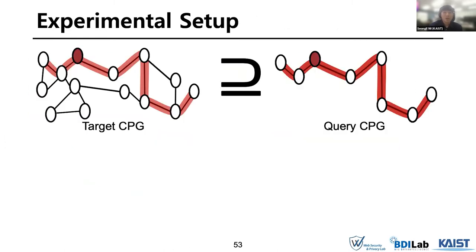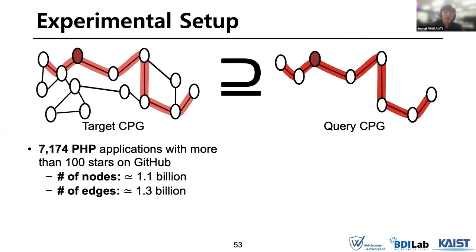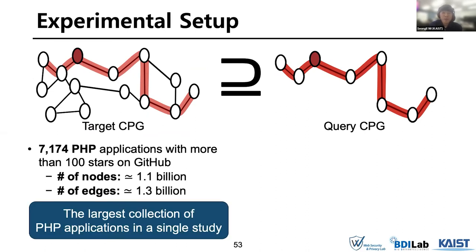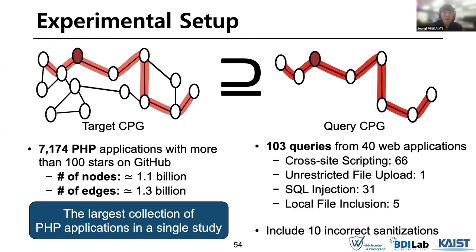Now I will show experimental evaluations on our system. To prepare a target CPG, we collected about 7,000 highly rated applications. The total number of nodes and edges are 1.1 and 1.3 billion respectively. To the best of our knowledge, this benchmark represents the largest collection of PHP applications in a single study. To prepare a query CPG, we collected 103 queries. These queries contain four kinds of vulnerabilities, including 10 bugs stemming from incorrect sanitizations.